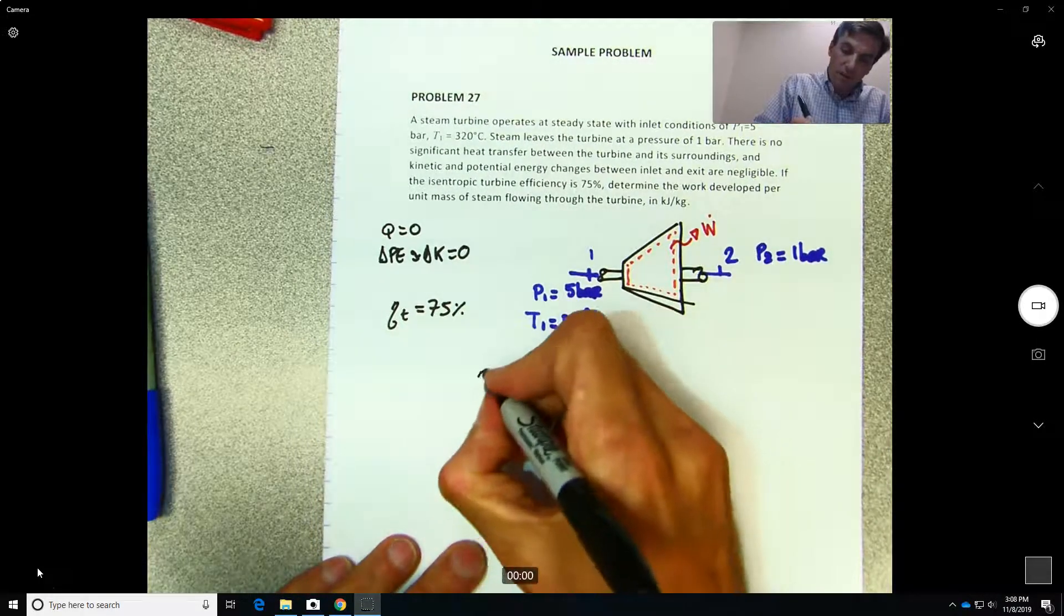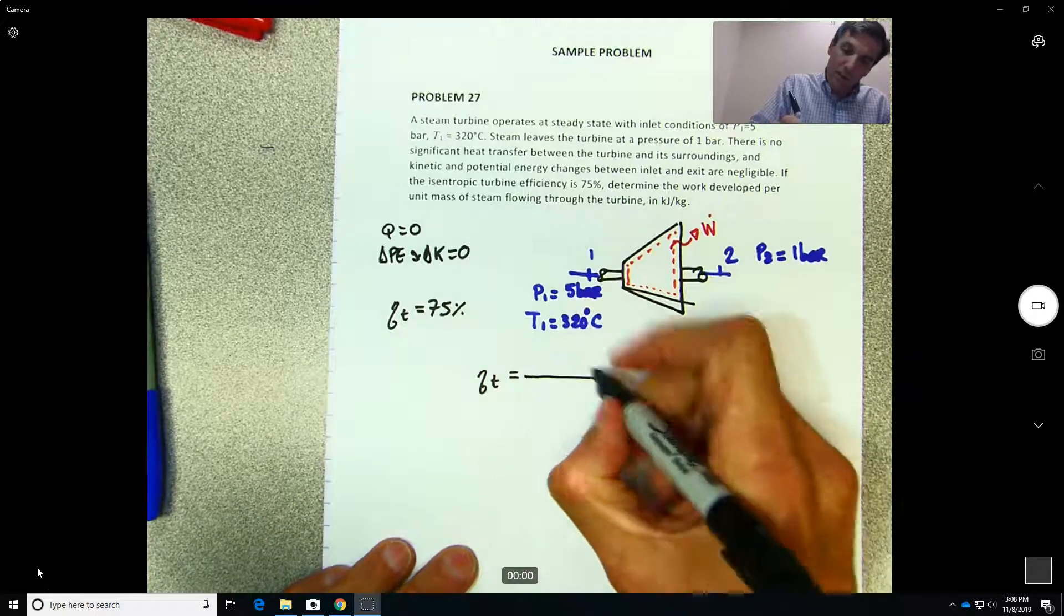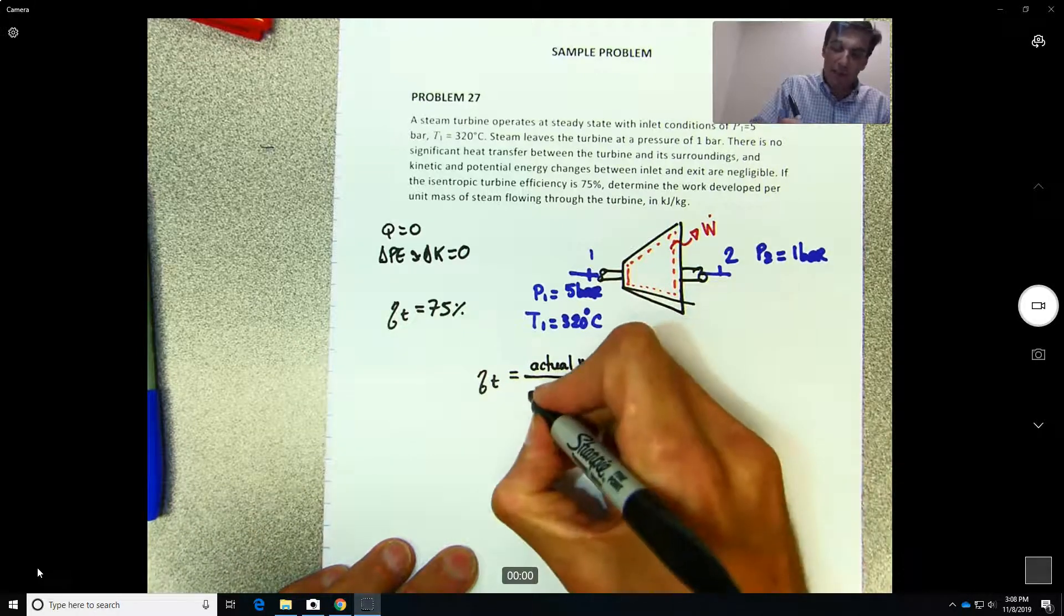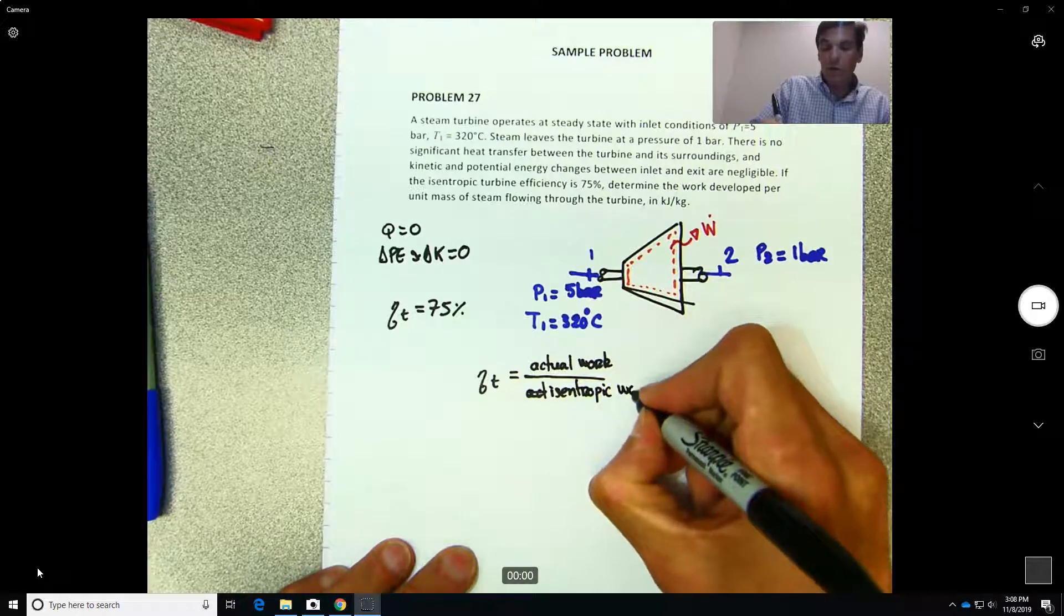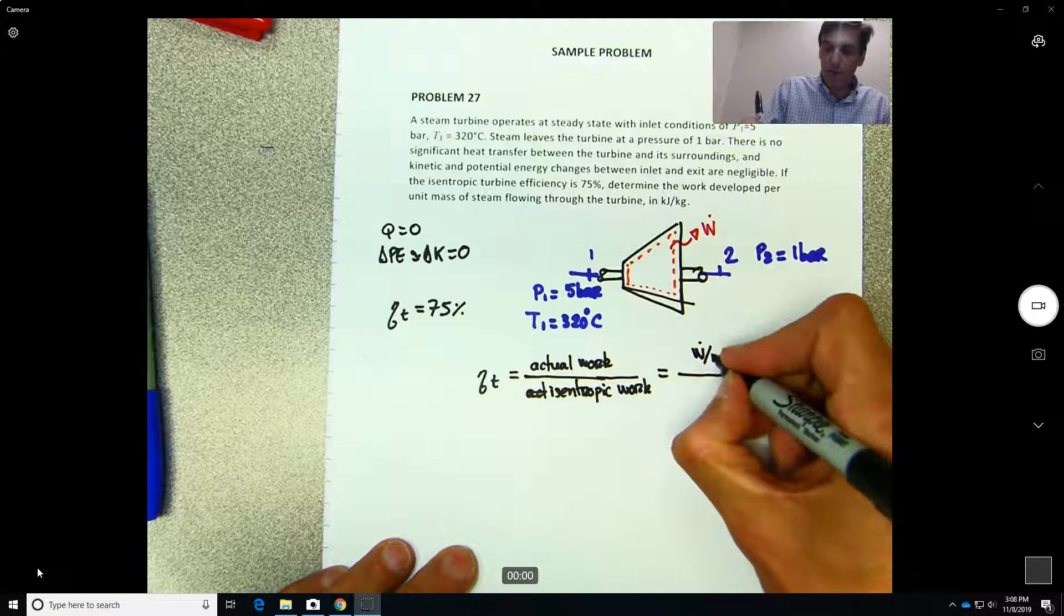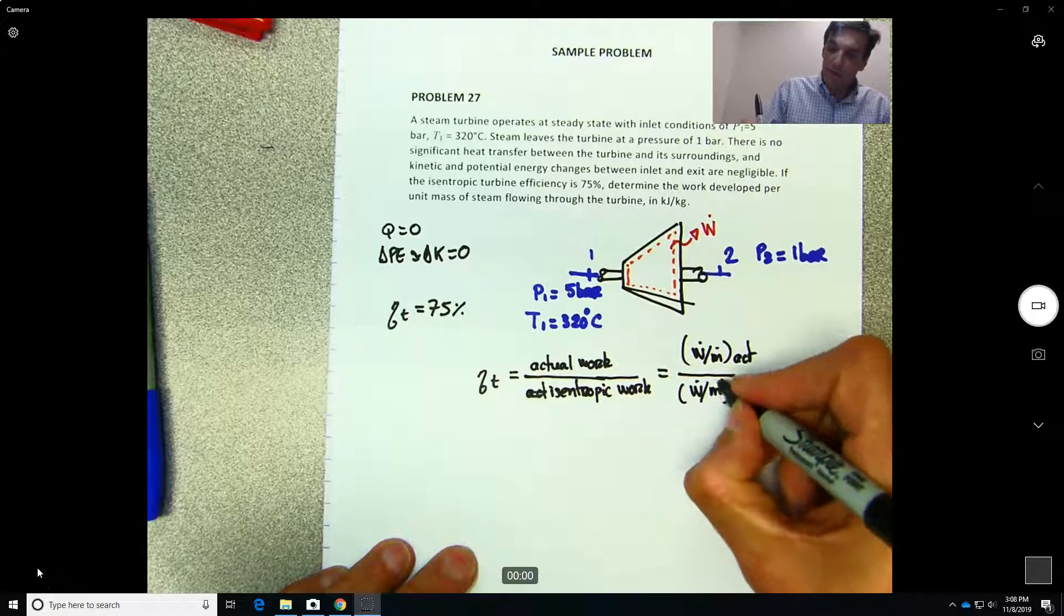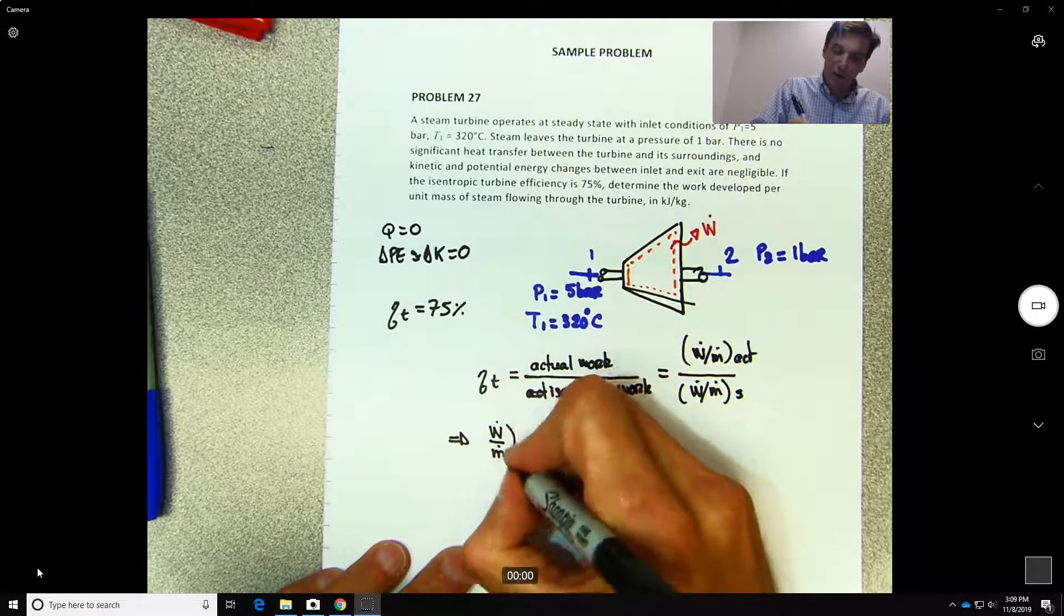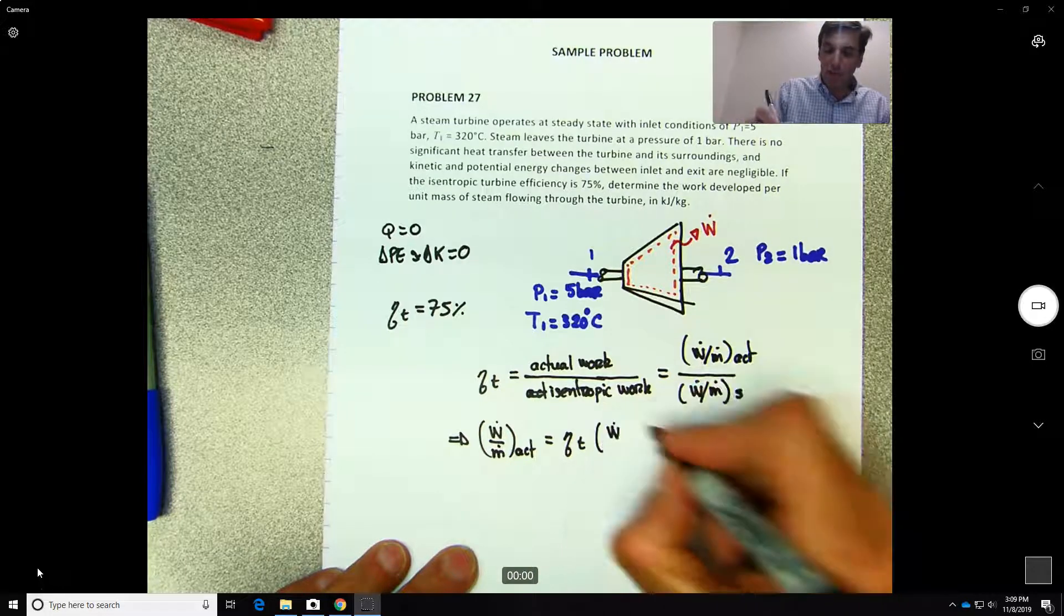From the previous video, what is the efficiency? It should be the actual work or actual performance, in this case actual work or power, divided by the ideal or isentropic work. Because this is a mass flow, we can say this will be w over m dot actual divided by w over m dot isentropic. So what we need to solve for is what is the actual work.